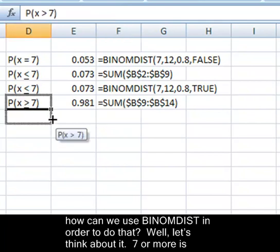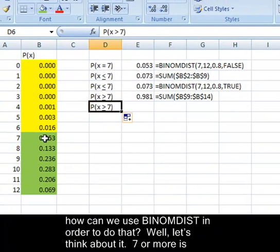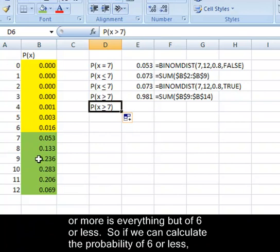But how can we use BINOMDIST in order to do that? Well, let's think about it. Seven or more is the opposite of six or less. I highlighted them in two different colors to show that to you. Seven or more is everything but six or less.